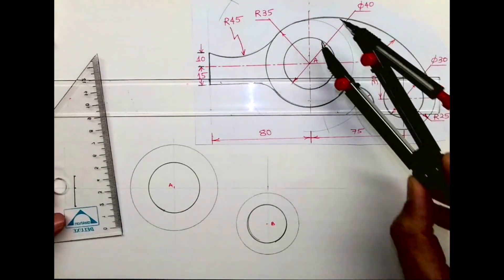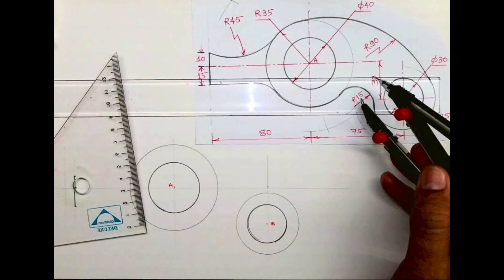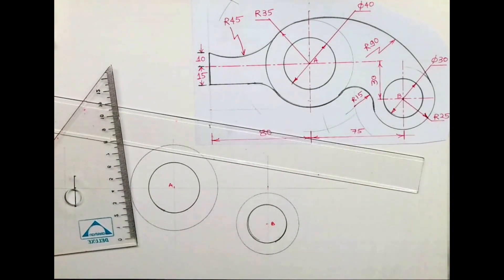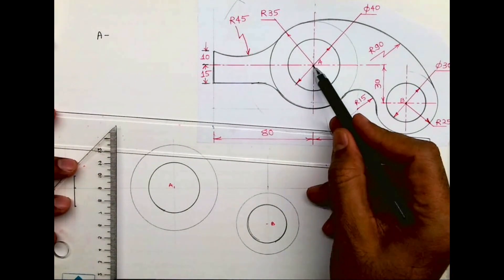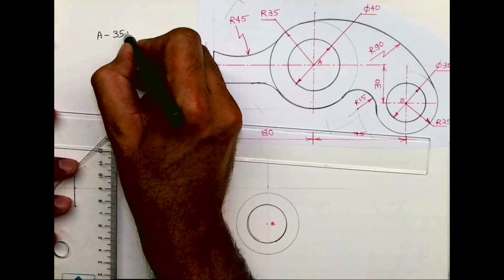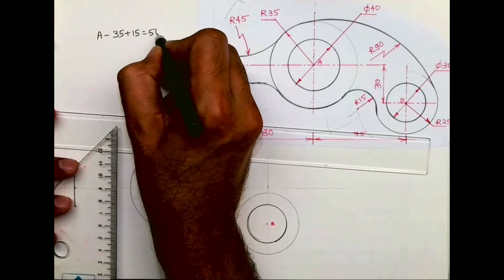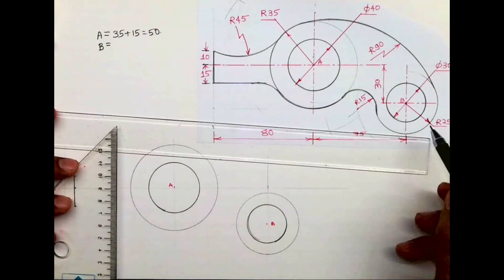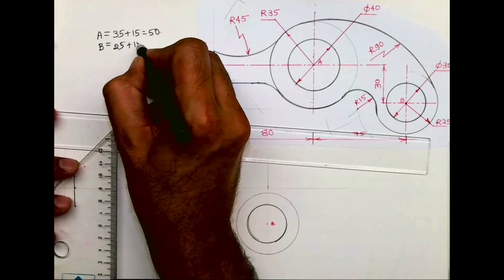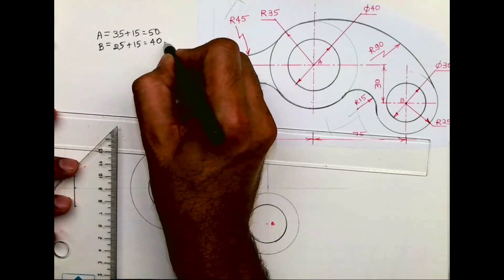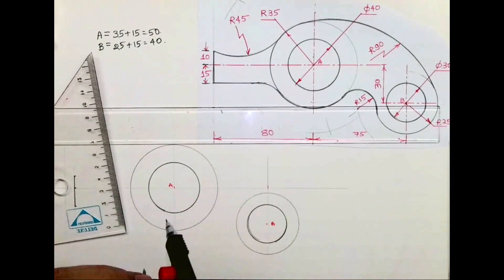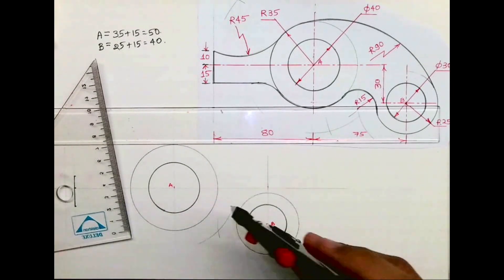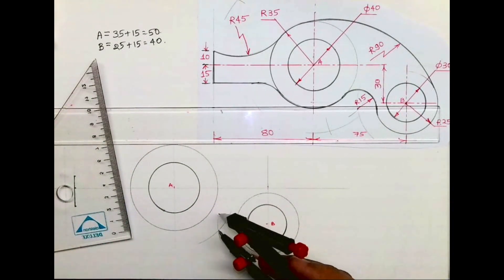Now how will you draw radius 15? This is external, touching radius 25 and radius 35. So from A I need to cut 35 plus 15, which is 50. And from B I need to cut 25 plus 15, which is 40.